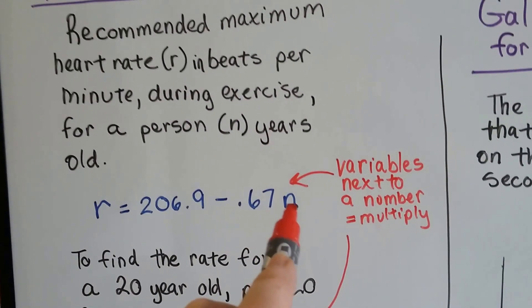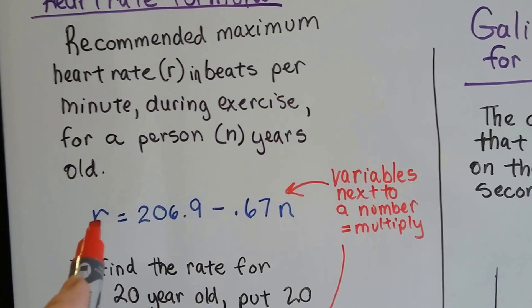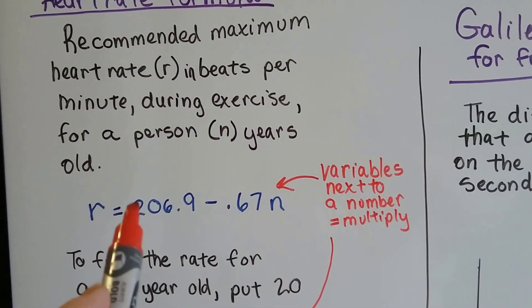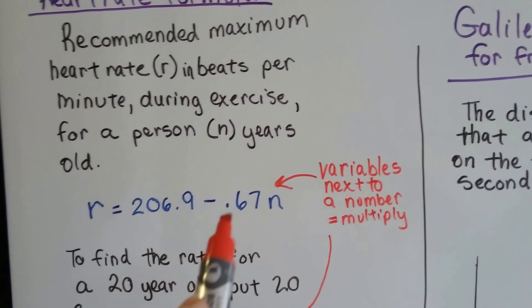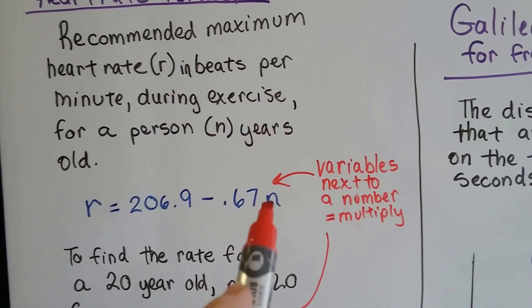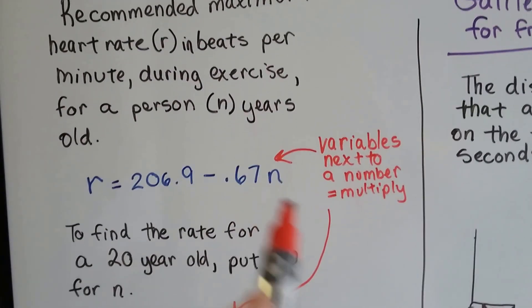So here is the age, N. R is the heart rate. What we do is we have 206.9 minus .67 multiplied by N. And remember when the variable is next to a number like this, it means we're going to multiply it.